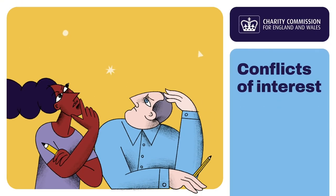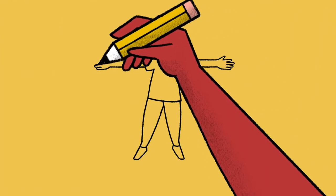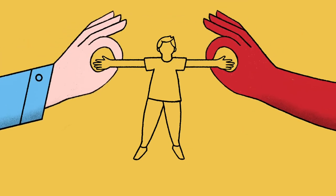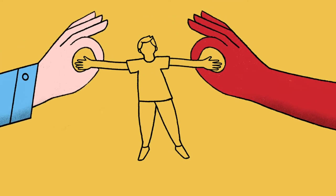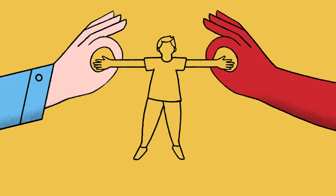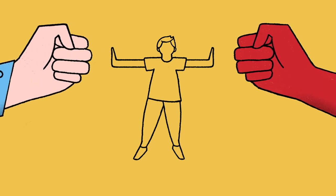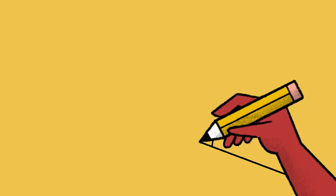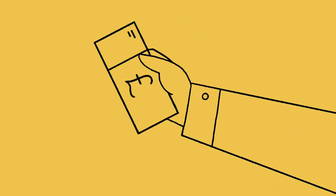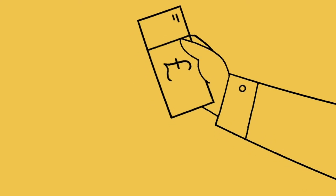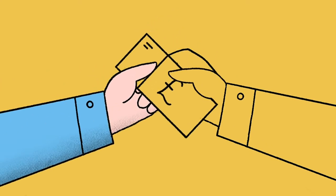One of the challenges of being a trustee is making sure every decision is in the best interests of your charity and never allowing your personal interests or the interests of others connected to you to influence your decisions. But what are conflicts of interest and how should you deal with them if they occur? Conflicts of interest can arise in many different situations — for example, they may involve money like making payments to trustees, or loyalty issues when your decisions may benefit a relative, friend or organisation you work for.